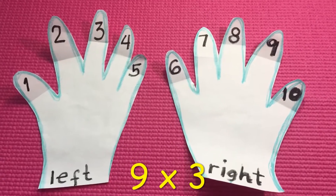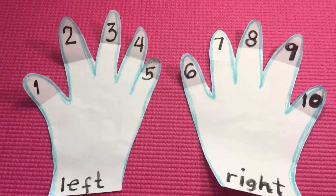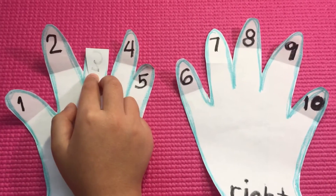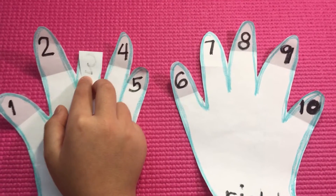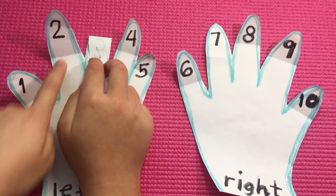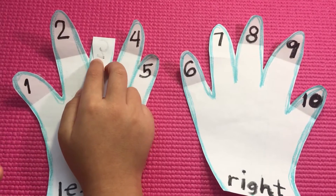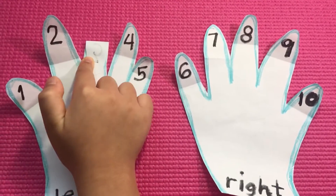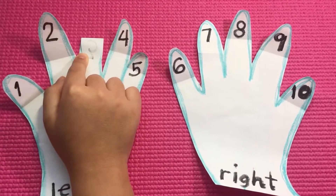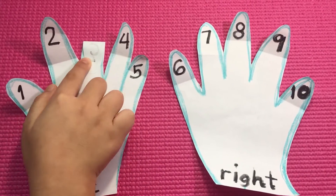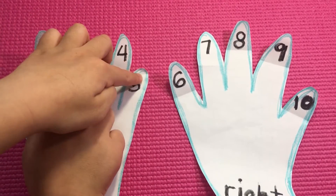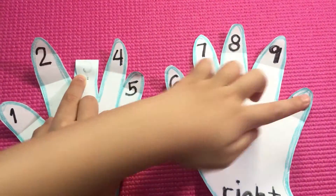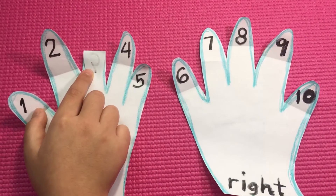Let's move on to 9 times 3. Let's fold finger number 3. How many fingers do you see on the left of the folded finger? Let's count: 1, 2. That means there are 2 tens. How many fingers do you see on the right side? Let's count: 1, 2, 3, 4, 5, 6, 7. So that means the answer is 27.